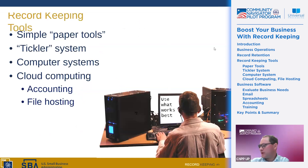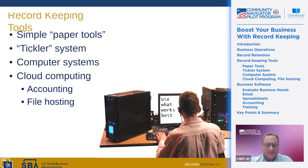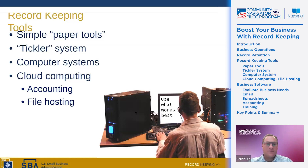Now we'll go over some record keeping tools, ranging from extremely simple — like a manila folder on a desk or a filing cabinet — to computer software to cloud computing and accounting file hosting. The key message on this slide is: use what works best. If you have a simple paper filing system that works well for you, you may not need to change it. If you're able to access the documents you need, everything is up to date, and you have the insights you want, there's no need to upgrade to software. If it's not broke, don't fix it.